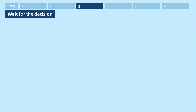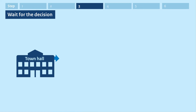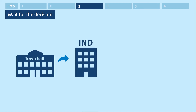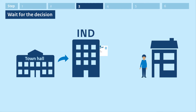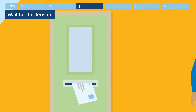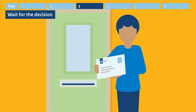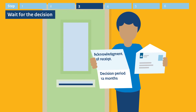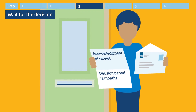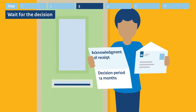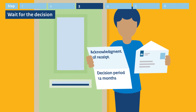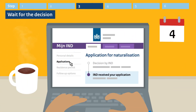Step 3. Wait for the decision. The town hall will send your application to the IND. You will receive an Acknowledgement of Receipt by post. This states how long the IND is allowed to take to decide on your application. This is known as the decision period. It is 12 months. You can follow your application in MyIND.